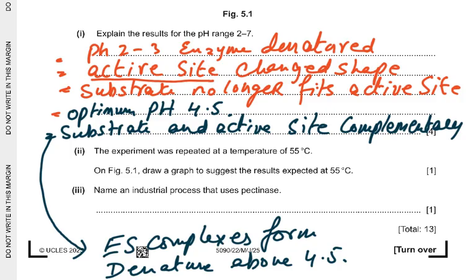To summarise: pH 2–3, enzyme denatured, active site changes shape, substrate no longer fits. Optimum pH 4.5: substrate and active site are complementary, enzyme-substrate complexes form. Denatured above pH 4.5. Any four of these mark scheme points would earn your four marks. Then it asks you to draw a graph to suggest results expected at 55 degrees Celsius.